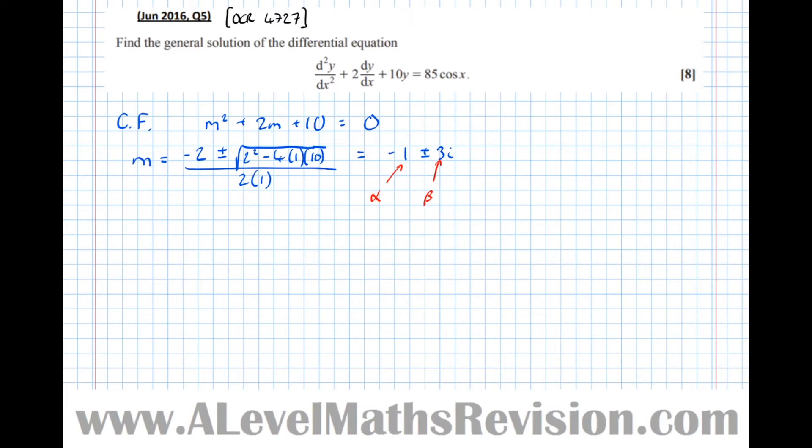is e to the alpha x, then we've got a sine of beta x plus b cos of beta x. Now we'll prove that in a previous video, so if this is all seeming new to you, go back to the other videos I've done on second order differential equations. There are lots of them explaining exactly why this is the case.